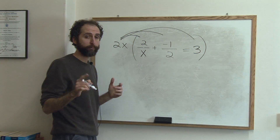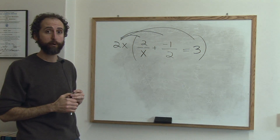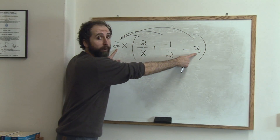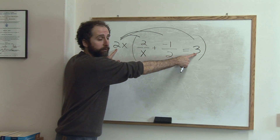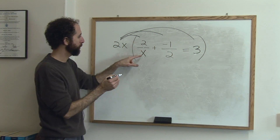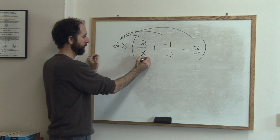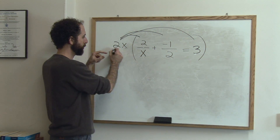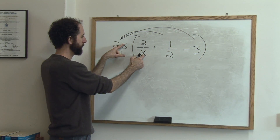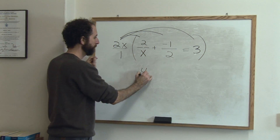The most important step — the most common careless error people make — is to forget to multiply by this part. You've got to remember to do that. So 2x times 2 over x: the x's are going to cancel, they're going to cross-cancel. This is really 2x over 1, so the x's cross-cancel, leaving 2 times 2, which is 4.